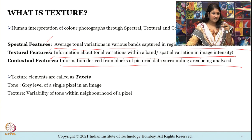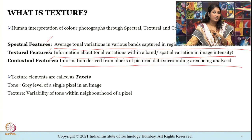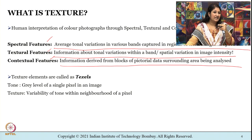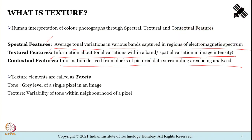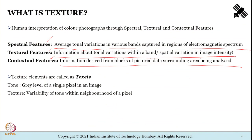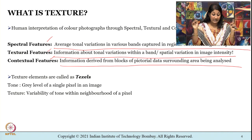Just like the smallest unit of an image is called a pixel or pel, texture elements are called texels. Now let me make a distinction between tone and texture. Tone is the grey level of a single pixel in an image. Texture is the variability of this tone within the neighborhood of a pixel. To reiterate: tone refers to the grey level of a single pixel, and texture is the variability of that tone within the neighborhood of a pixel.